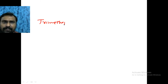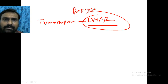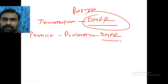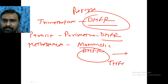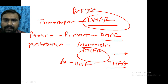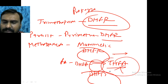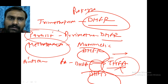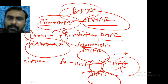Drugs like trimethoprim inhibit dihydrofolate reductase in prokaryotes. For parasites like malaria, pyrimethamine inhibits dihydrofolate reductase. Methotrexate inhibits mammalian dihydrofolate reductase. All these drugs prevent the formation of active tetrahydrofolate — since folic acid must be converted to dihydrofolate and then to tetrahydrofolate by dihydrofolate reductase. If this enzyme is inhibited, tetrahydrofolate is not formed, DNA synthesis stops, and cell division is prevented. Methotrexate is used as an anticancer agent, pyrimethamine for malaria, and trimethoprim for bacterial infections.